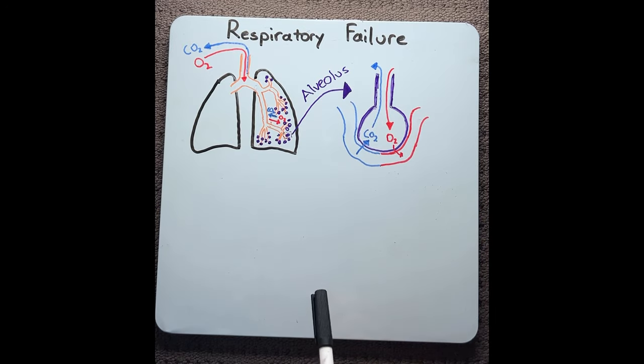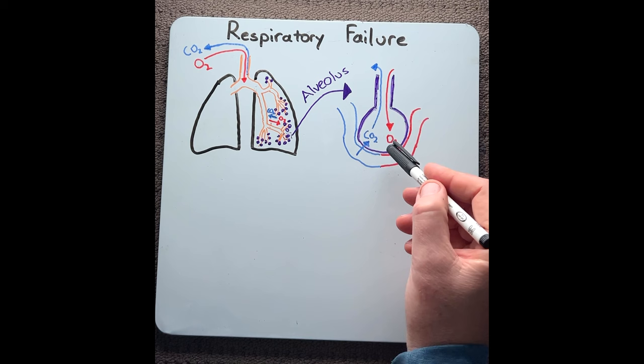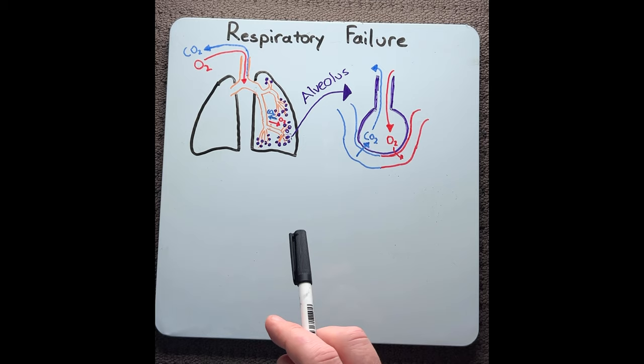Our respiratory system allows for gas exchange between the environment and our body, specifically putting oxygen into our blood and pulling carbon dioxide out of it. When the respiratory system can no longer do this, this is known as respiratory failure. Let's take a deeper look at how this can happen.